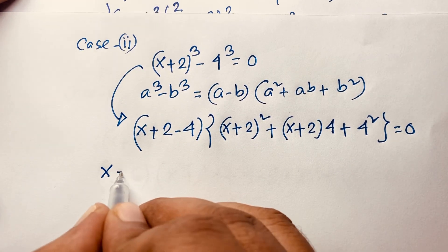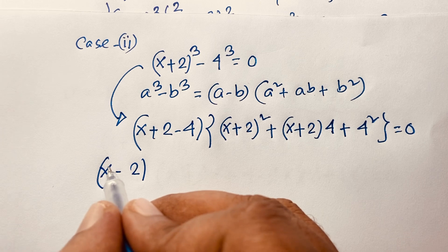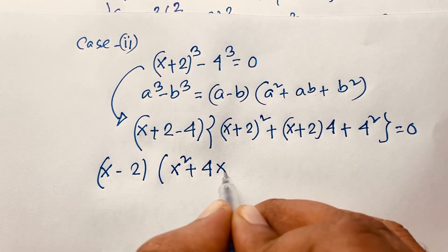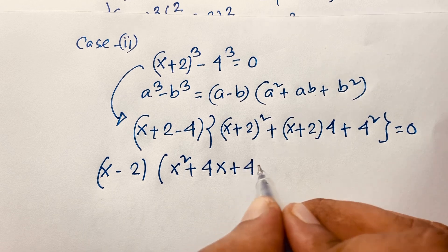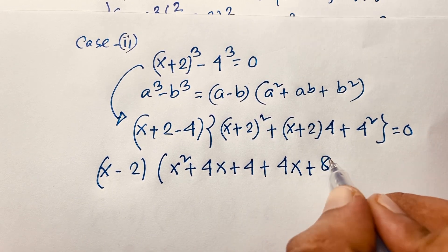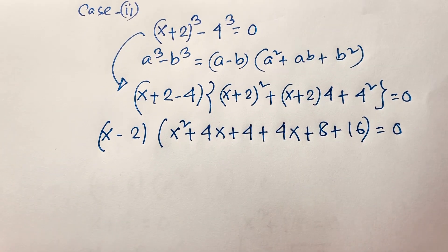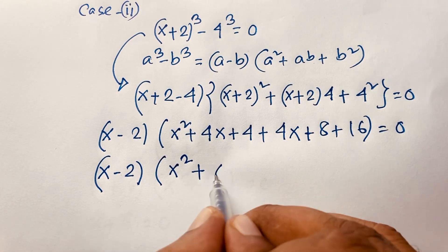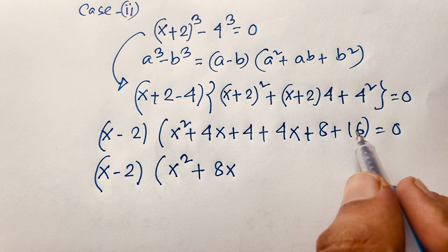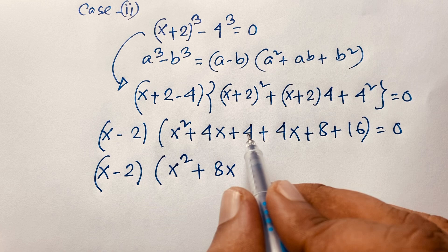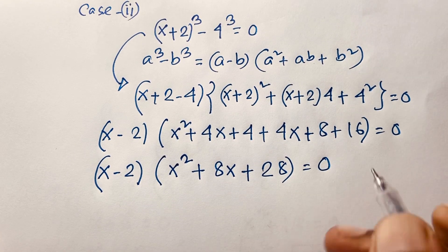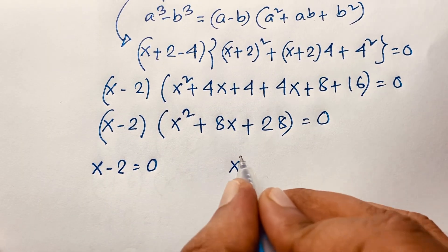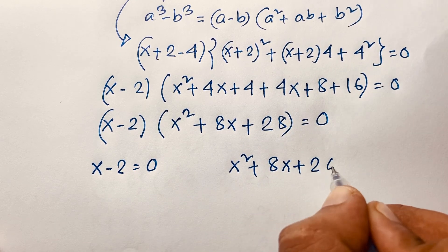Expanding the second factor: (x+2)² = x² + 4x + 4, plus 4(x+2) = 4x + 8, plus 16. So x² + 4x + 4 + 4x + 8 + 16 = x² + 8x + 28. We now have (x − 2)(x² + 8x + 28) = 0. The two sub-cases are: x − 2 = 0, and x² + 8x + 28 = 0.